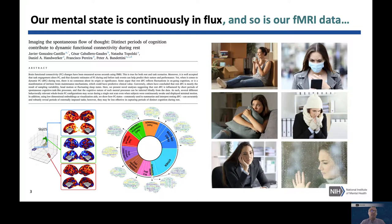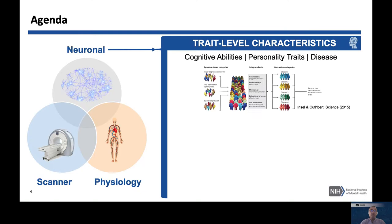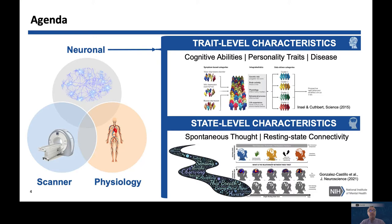Within this framework of large inter-subject and intra-subject variability in resting state fMRI, today I want to talk first about the different sources contributing to this variability — with an emphasis on those we don't tend to discuss every day. Then I'll share thoughts on what we should do about them when our goal is to use resting state fMRI to capture trait-level characteristics like cognitive abilities, personality traits, or disease, or if we're interested in state-level characteristics such as the neuronal correlates of spontaneous thought.